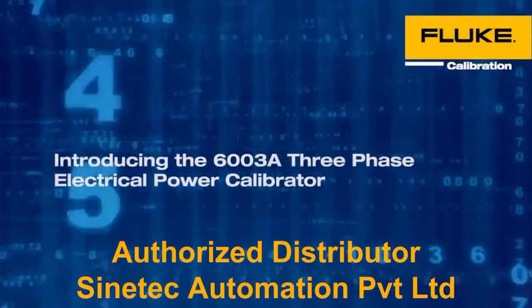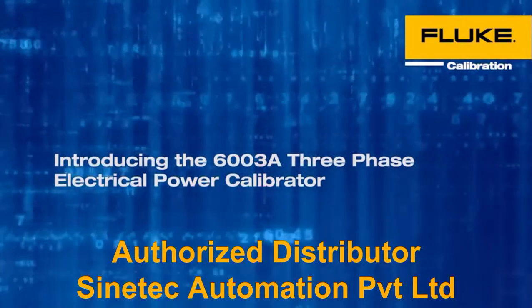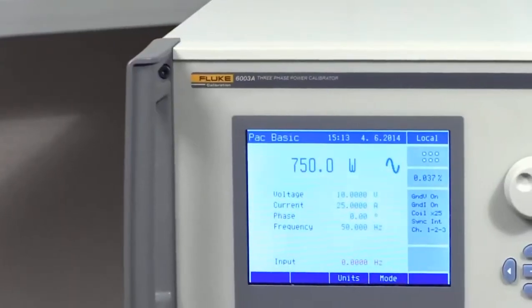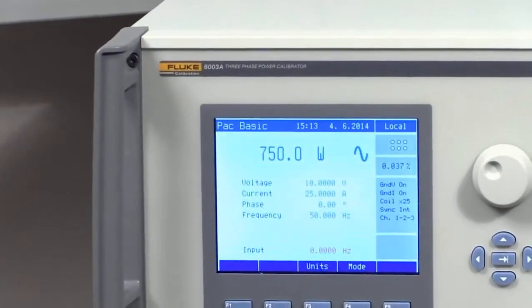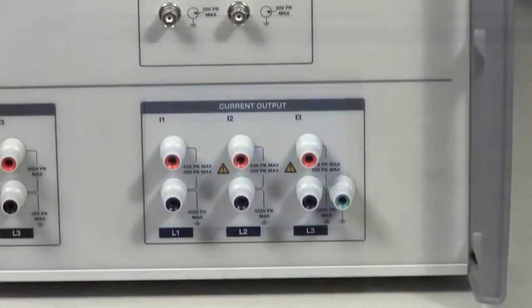Introducing the 6003A Three-Phase Electrical Power Calibrator, three power phases in a single, easy-to-use instrument. The Fluke Calibration 6003A Three-Phase Electrical Power Calibrator is the most cost-effective way to source three independent phases with superior accuracy and performance from a single instrument.